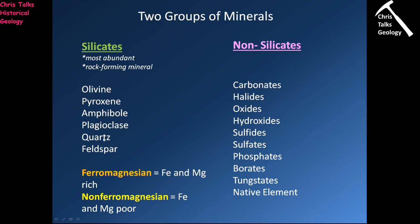In contrast, plagioclase, quartz and potassium feldspar are quite light minerals and are classified as non-ferromagnesian — iron and magnesium poor. The non-silicates are typically accessory minerals, making up a very small proportion of most rocks. However, when they occur in large quantities — things like oxides, sulfides, sulfates, phosphates, borates, tungstates and native elements — they are major ore minerals used to extract metals.